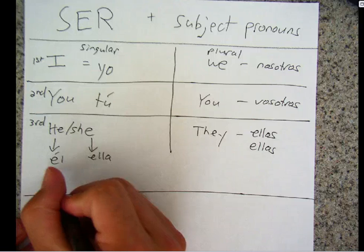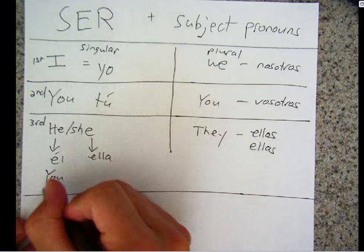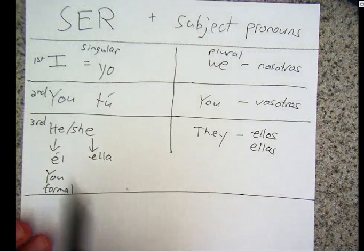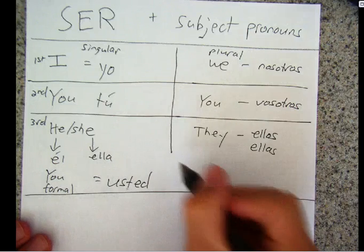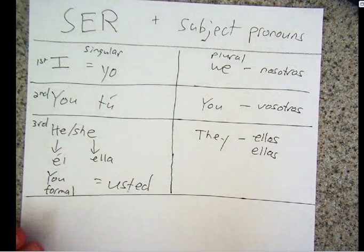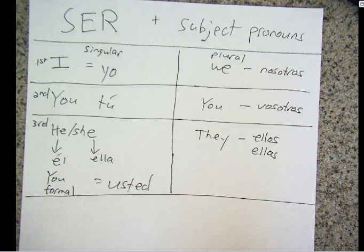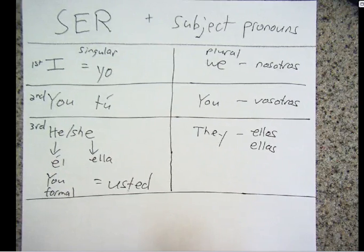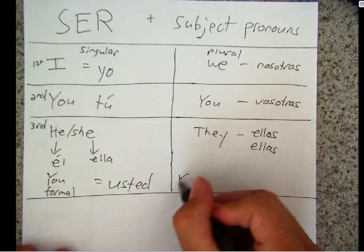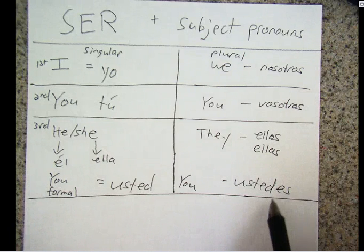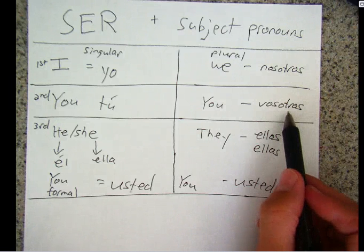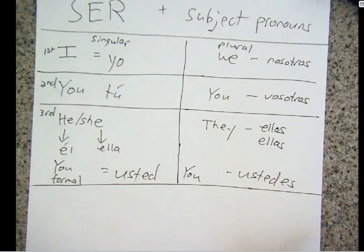There's one more: you formal, which is grouped with the third person singular — he and she. You formal is usted, just like you learned in the first chapter. Como estás? — How are you? — to a friend. Como está usted? — How are you? — to a teacher, for example, someone you're showing formality to. The plural of this is you plural, which is ustedes. Please keep in mind that ustedes is used for you all or you guys everywhere in the world except in Spain, where they use vosotros. So that's the subject pronouns — that's part one. We must memorize these words.